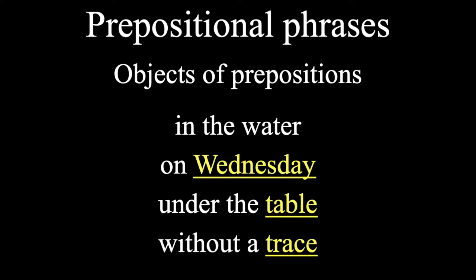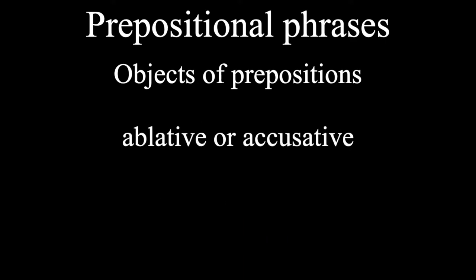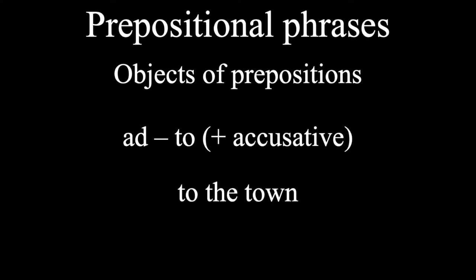In Latin, objects of prepositions will either be in the accusative or the ablative case. And it generally just depends on the preposition. For example, ad means to or towards and is followed by the accusative. So to the town would be ad opidum.